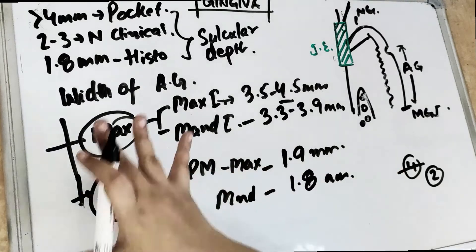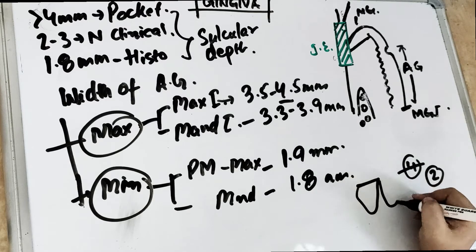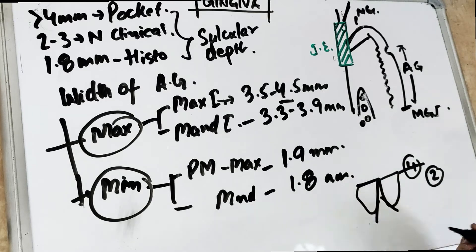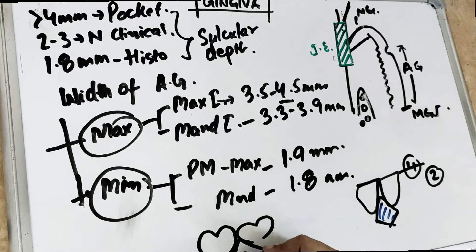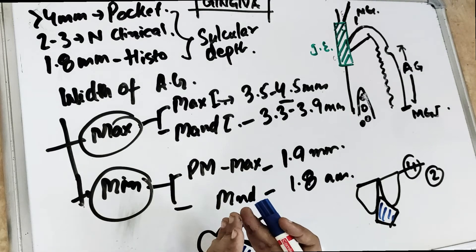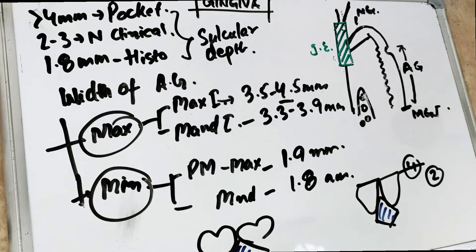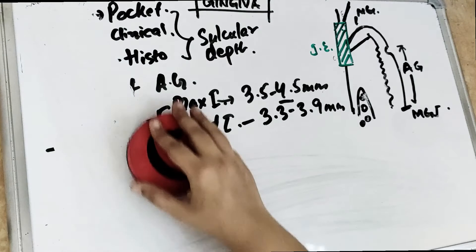This is what we finished in the last video. Also we covered that the interdental gingiva is pyramid-shaped in the anterior region, and posteriorly it is col-shaped like a tent. The col is non-keratinized. This is what we studied in the last video, including the biological width and junctional epithelium.